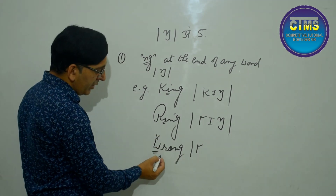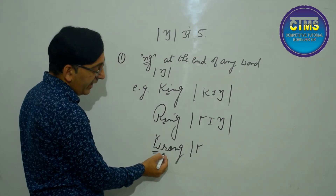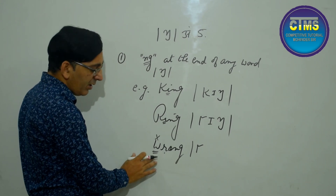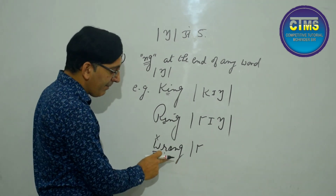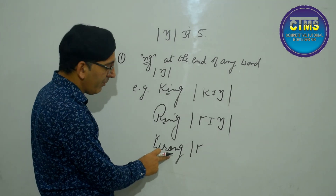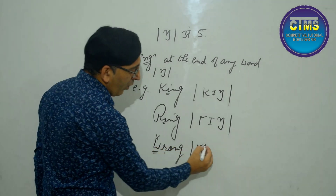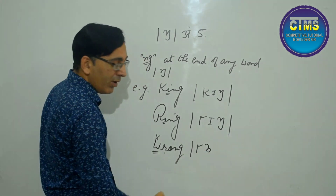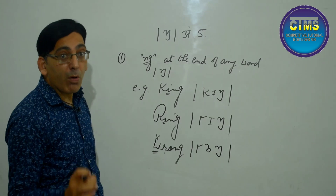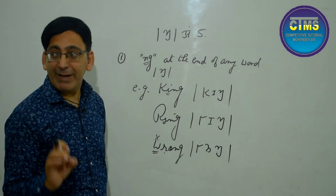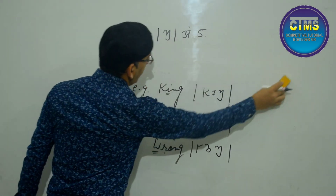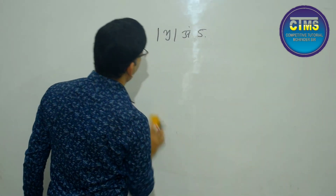When you have a word beginning with W, the W can be a silent letter. There is also the word 'wrong' — W-R-O-N-G — this is pronounced 'wrong'. This is our first rule. Now we discuss our second rule.